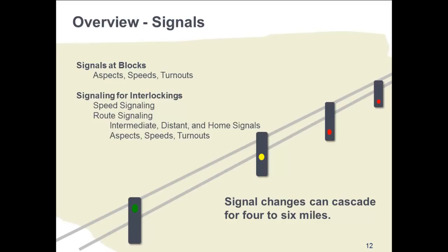Ideally, if new interlockings are being inserted, they should be located at existing signal sites in order to minimize disruptions to the existing signal system. But if geometry or topography don't permit this, then the signal changes can cascade anywhere from 4 to 6 miles away. Signals will generally tell the engineer what to do at the next signal, typically 2 miles away. Also note that the time required for fabrication and installing signaling systems is typically around 18 to 24 months.